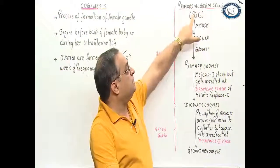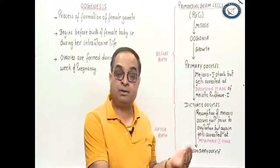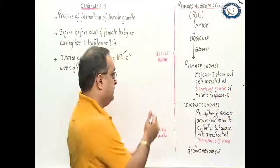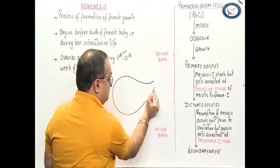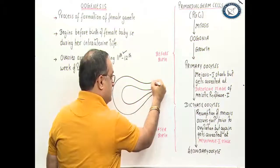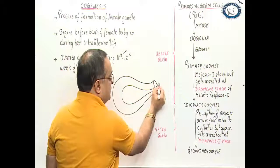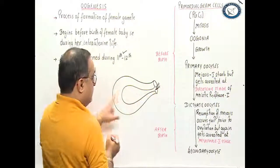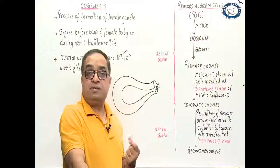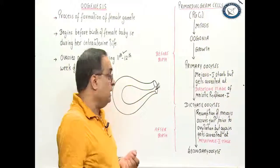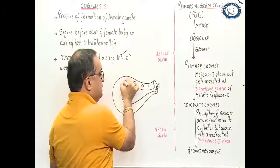Primordial germ cells, or PGCs, are present in the ovaries before birth. There are two ovaries — right ovary and left ovary. In a rough representation of an ovary, the outer region is the cortex, the inner region is the medulla, and the hilum is where blood vessels, lymph vessels, and nerves enter. The ovarian cortex has follicles in different stages of development. An ovarian follicle refers to an oocyte surrounded by different layers.